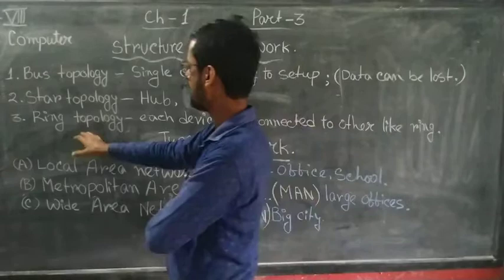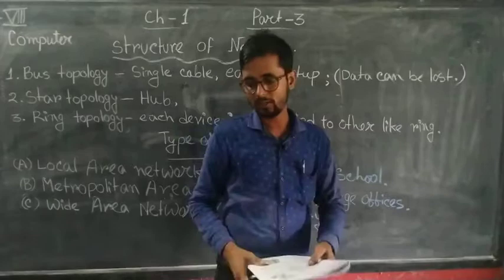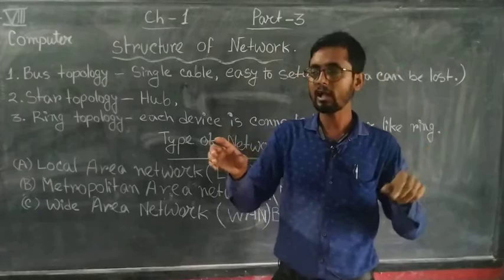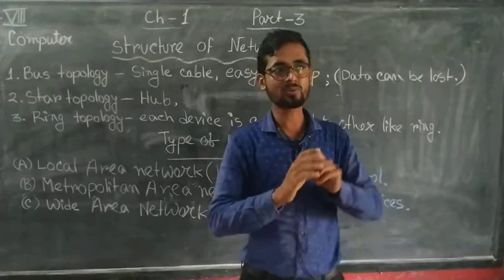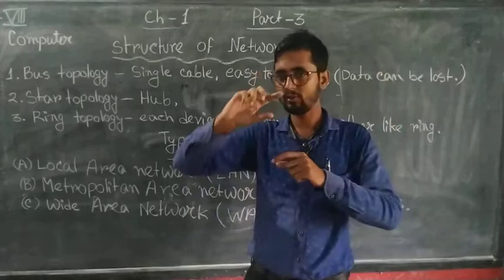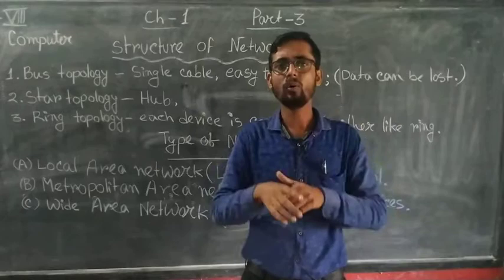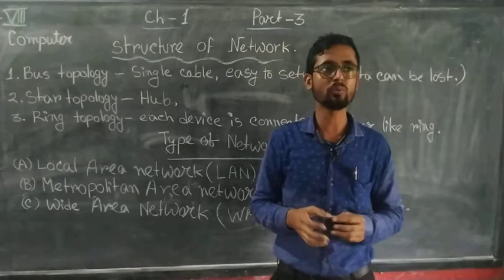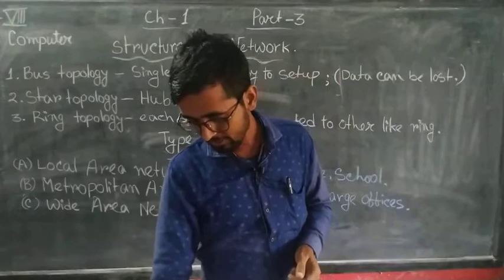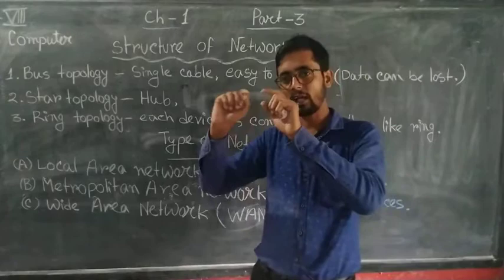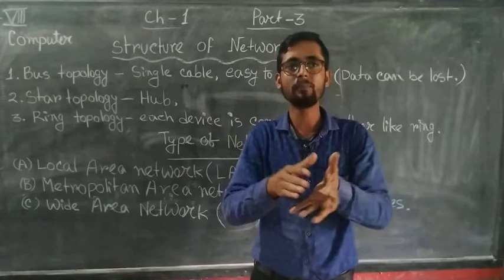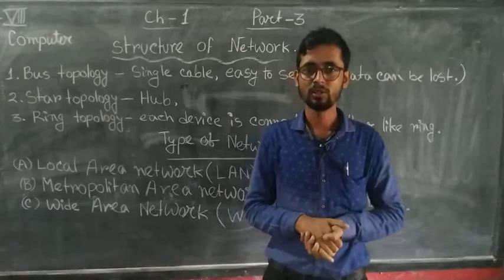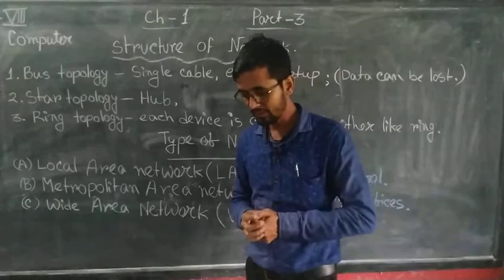Now let us come to number three — ring topology. In a ring topology network, computers are connected to each other through a cable in the shape of a ring. If there is a computer in this room and other computers are in different rooms, all the computers will be interconnected by a cable in a ring-like model. It is easy to set up and easy to work with. However, one disadvantage is that if a single computer stops working, the entire ring network will not work — which can be a very big problem.